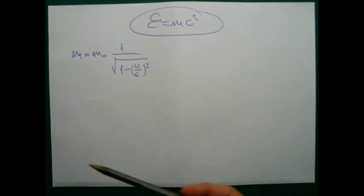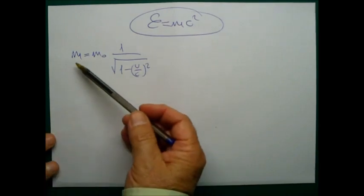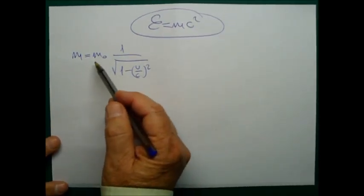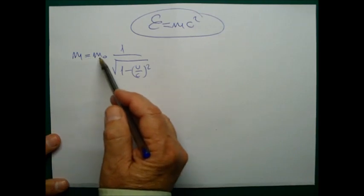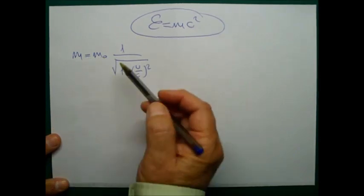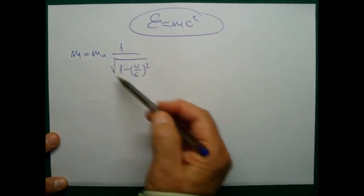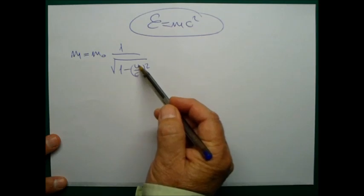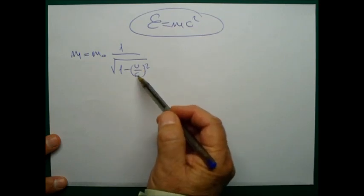I will start from this equation here, which is the mass. A moving mass will be equal to the mass of the object in equilibrium multiplied by this fraction here. V is the speed of the object and C is the speed of light.